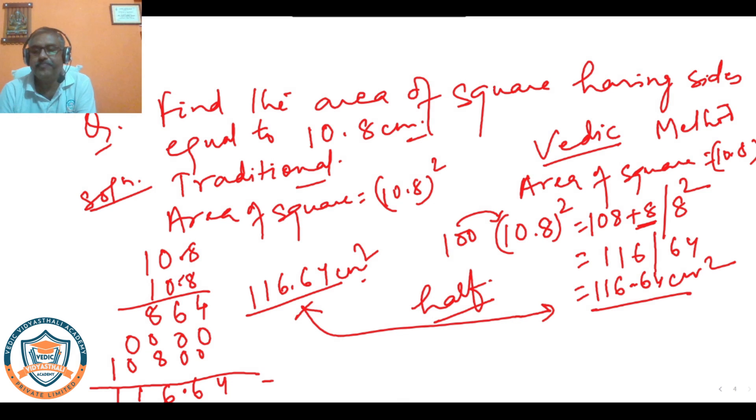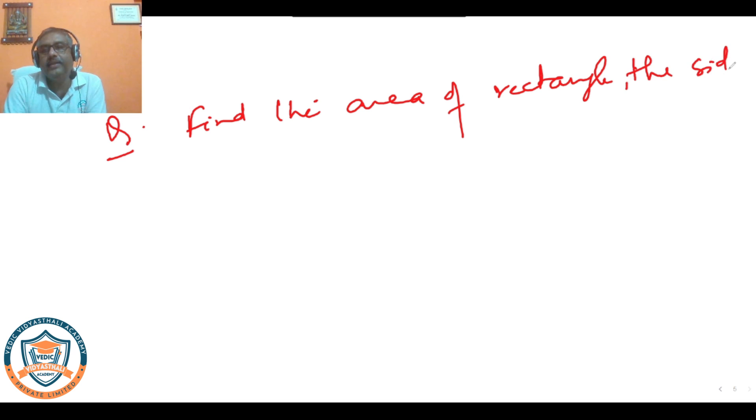Let us see another example. Suppose we have to find area of rectangle. Find the area of rectangle, sides of which are 1.4 cm and 1.7 cm. Same thing we will be doing by traditional method first.